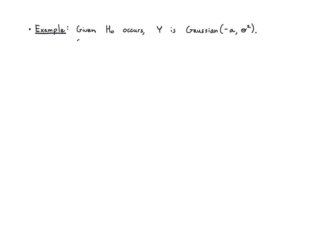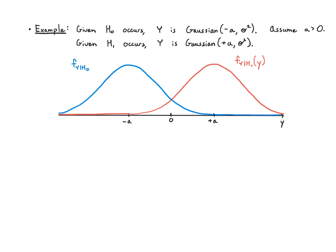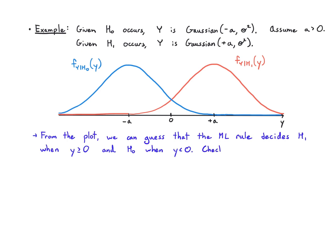Let's say under H0 we have a Gaussian with mean minus a and variance sigma squared, and under H1 the mean is plus a, with a greater than zero. So we see a Gaussian in red under H1 centered at plus a, and a Gaussian in blue centered at minus a — they have the same width because they have the same variance. From the plot, the ML rule picks the higher likelihood, and that crossover point happens at y equals zero. So we decide H1 when y is greater than or equal to zero, and H0 when y is less than zero.